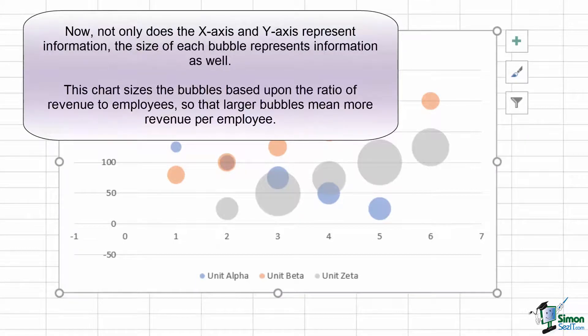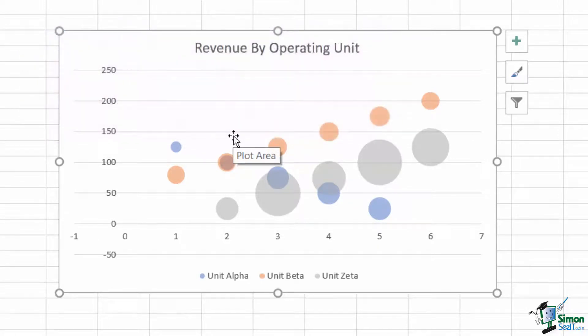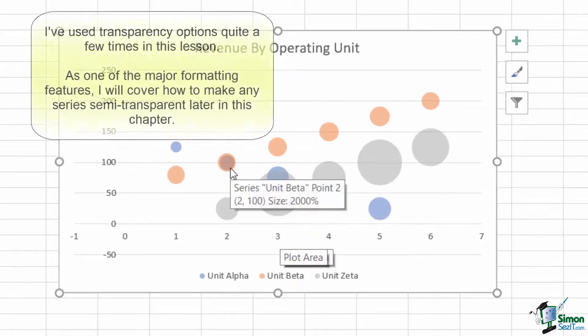In this case, I simply made the spots change in size based upon the ratio of employees to revenue. Bigger circles mean a higher revenue per employee, while smaller circles mean less revenue per employee. Such graphs can be interesting and useful, and making the series semi-transparent can help in identifying overlapping points. As you can see, Unit Zeta's high level of revenue per employee nearly hides the Unit Alpha amount at 3, while the Unit Beta completely hides Unit Alpha at 2.